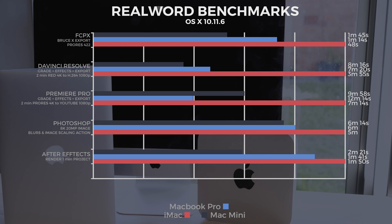In Premiere Pro, we ran grade effects and exported to YouTube 1080p — the iMac took the lead again, which I think is just due to the quad-core performance. In Photoshop, we used an 8K, 20-megapixel image and applied some blur and image-scaling actions — the iMac took the lead by about a minute. In After Effects, we rendered a one-minute project out, and while we don't see a huge improvement with the quad-core, there is a little bit of an improvement over the MacBook Pro.